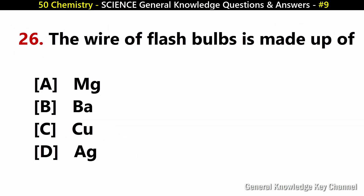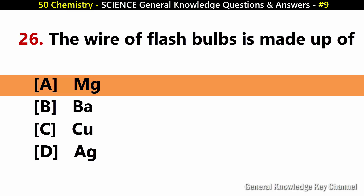The wire of flash bulbs is made up of? Answer A: Mg — Magnesium.